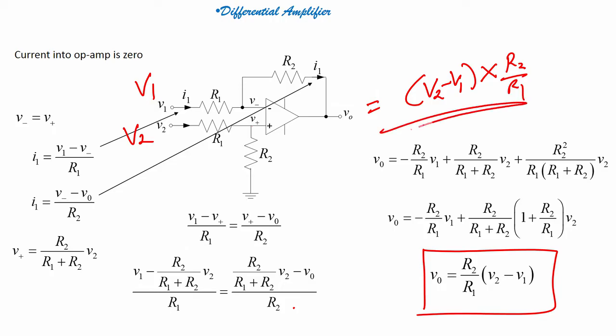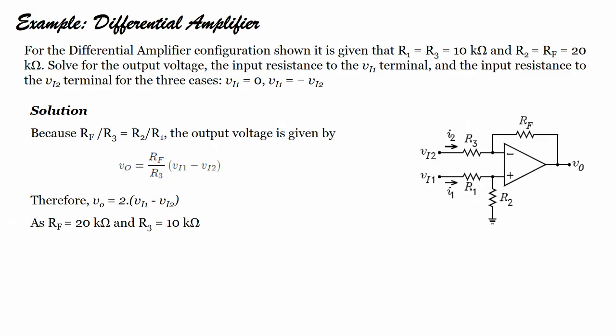This is the formula to remember: Vo = R2/R1 × (V2 minus V1). This will be my differential amplifier. Now let us solve an example.